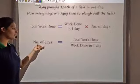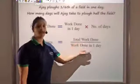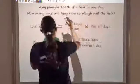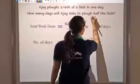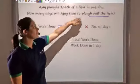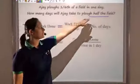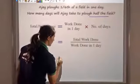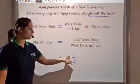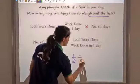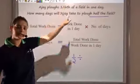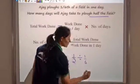Number of days equals total work done divided by work done in one day. Now the total work that has to be done is half the field. The question asks how many days will he take to plow half the field, so total work to be done is not one but half. So if you remember this formula, you can solve all such problems.